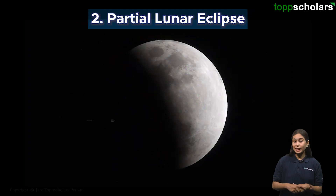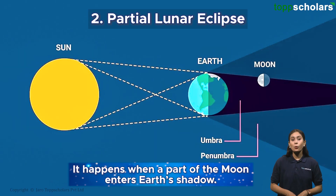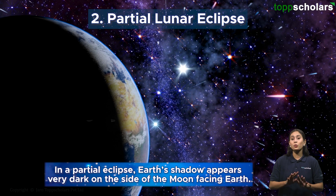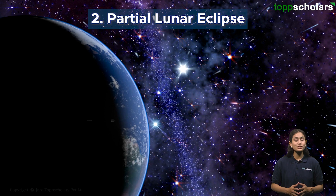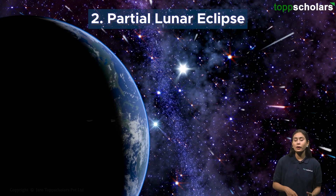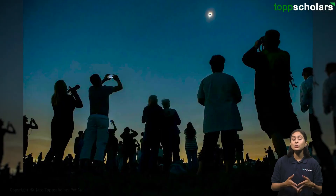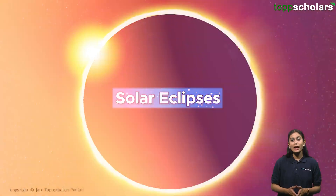This makes the moon appear red to people on Earth. The second type is the partial lunar eclipse, which happens when only part of the moon enters Earth's shadow. Earth's shadow appears very dark on the side of the moon facing Earth. A lunar eclipse is generally a few hours long, and at least two partial lunar eclipses happen every year, but total lunar eclipses are rare. It is safe to look at a lunar eclipse.